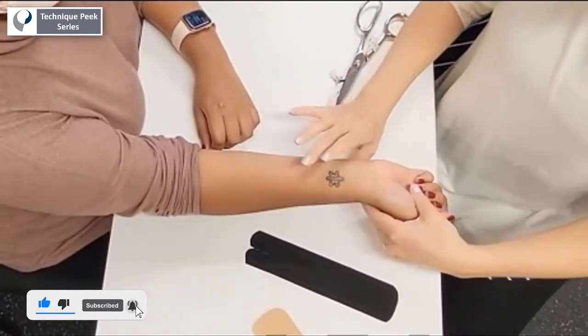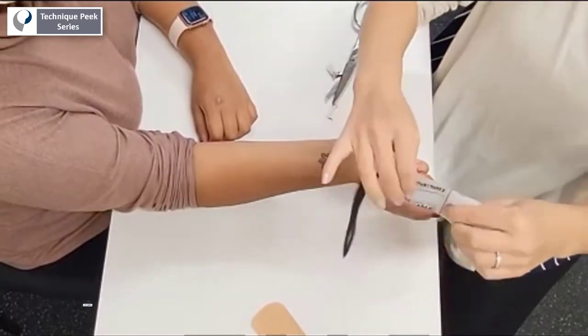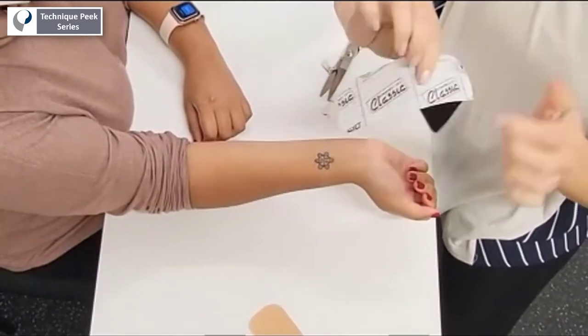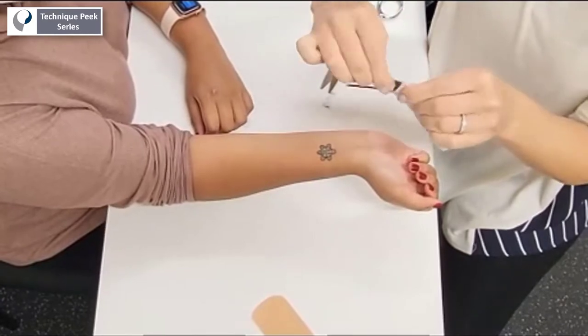Prior to application, be sure to cleanse the skin with rubbing alcohol. Tear your piece one and a half squares from the base and at the end of each tail.